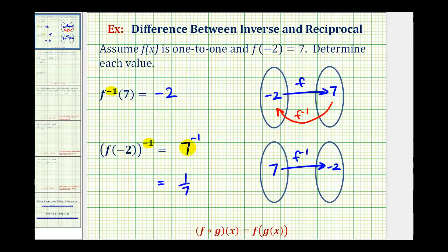Another way to think of this is you could put this over one to make it a fraction. Then if this crosses the fraction bar, it's going to change the sign of the exponent, so this would be equal to one seventh. I hope this explanation helps.